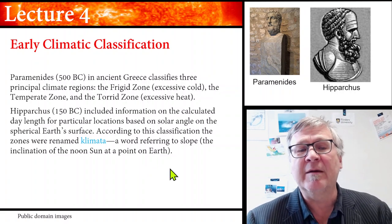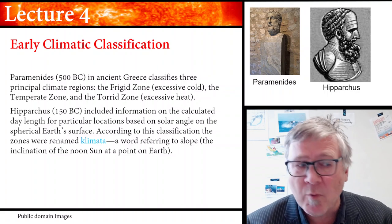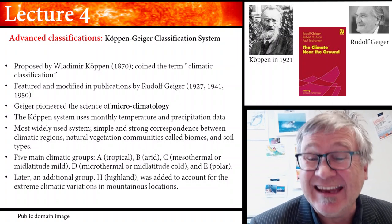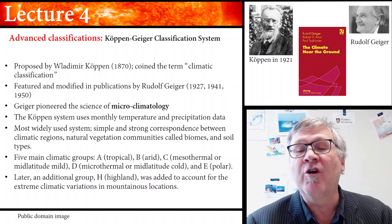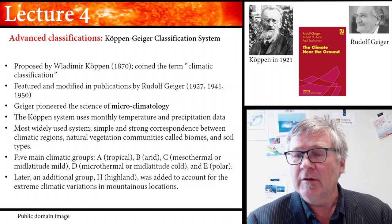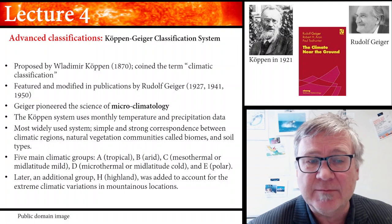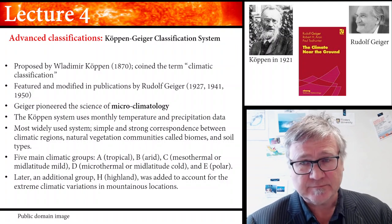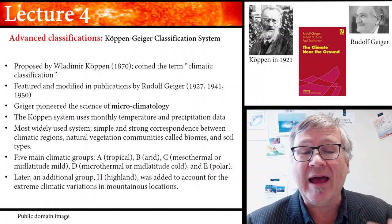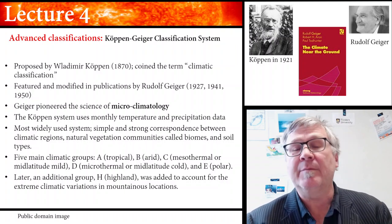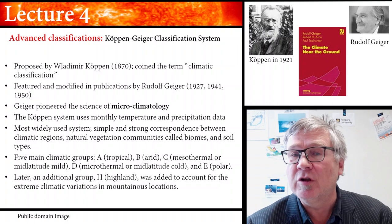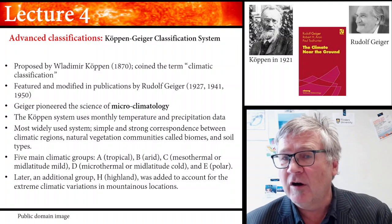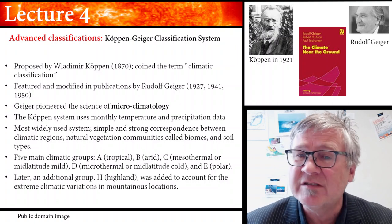It took a long time before climate classifications became more advanced. Vladimir Köppen in 1870 introduced the term climatic classification and proposed a classification scheme that was later featured and modified by Rudolf Geiger. Rudolf Geiger also pioneered the science of microclimatology, which looks at climate differences on timescales of hundreds of meters to kilometers — on very small scales.